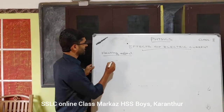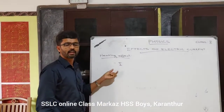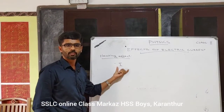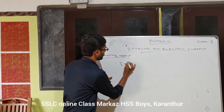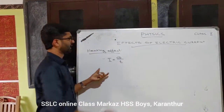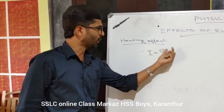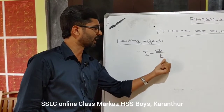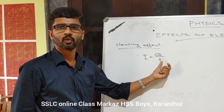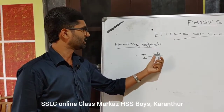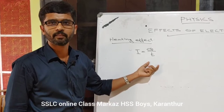Electric current is denoted by the letter I. The formula is I is equal to Q by T, where Q is the electric charge and T is the time. Electric current I equals electric charge per unit time.